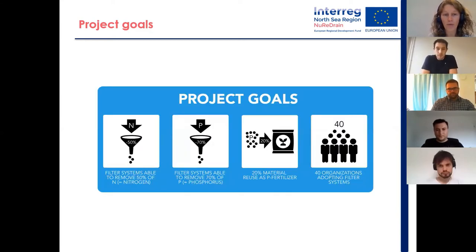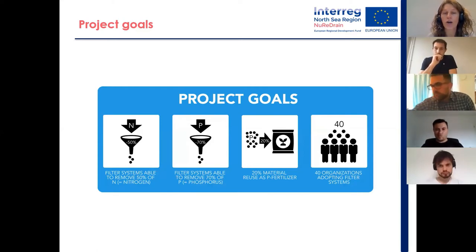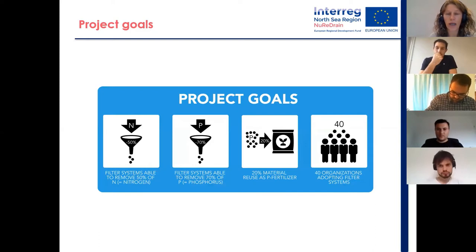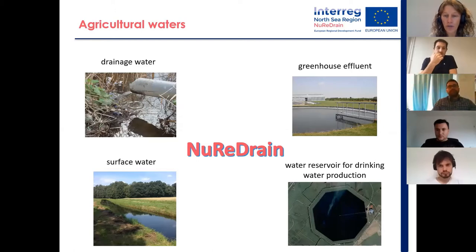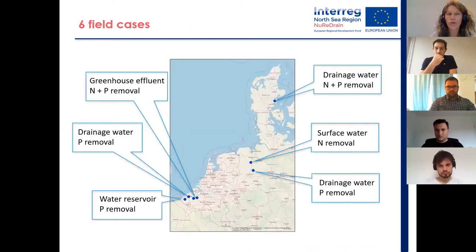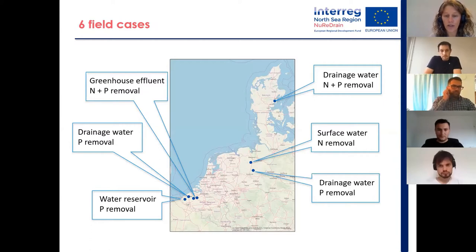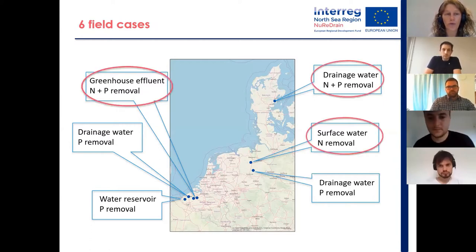We have four project goals. First of all we aim to develop filter technologies that can remove at least 50 percent of nitrogen, 70 percent of phosphorus, and we hope to reuse at least 20 percent of the phosphorus-saturated filter materials. In the end we aim that 40 organizations will be adopting our filter systems. We mainly focus on drainage water but we also consider greenhouse effluent, surface water, and water coming from a reservoir for drinking water production.